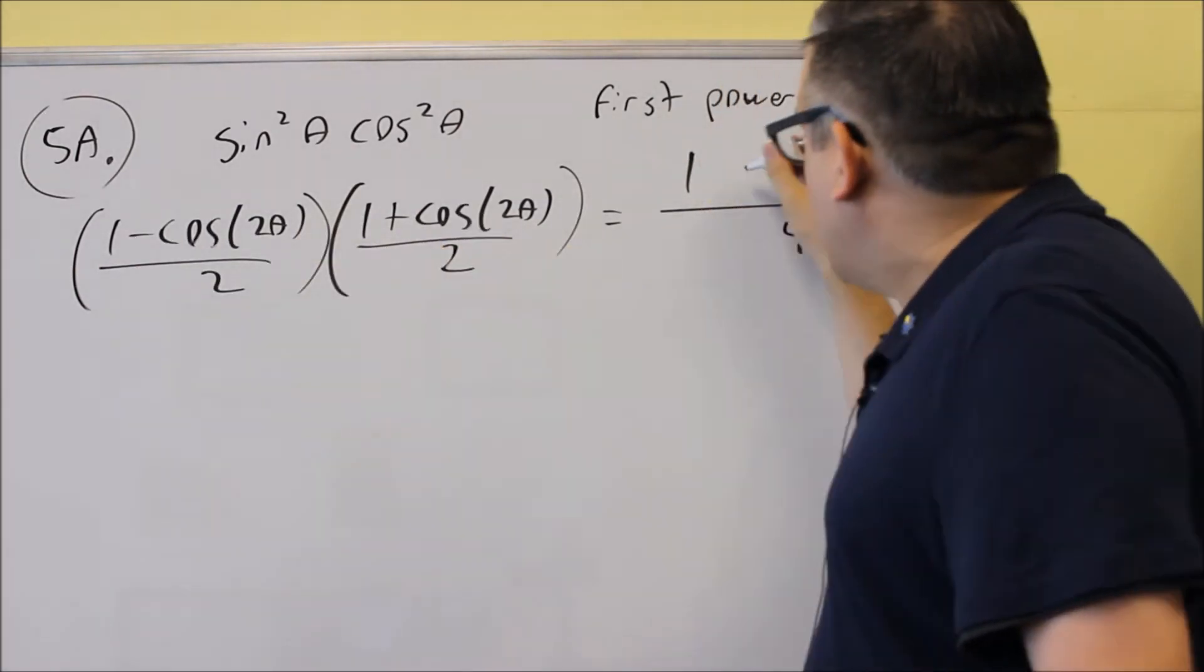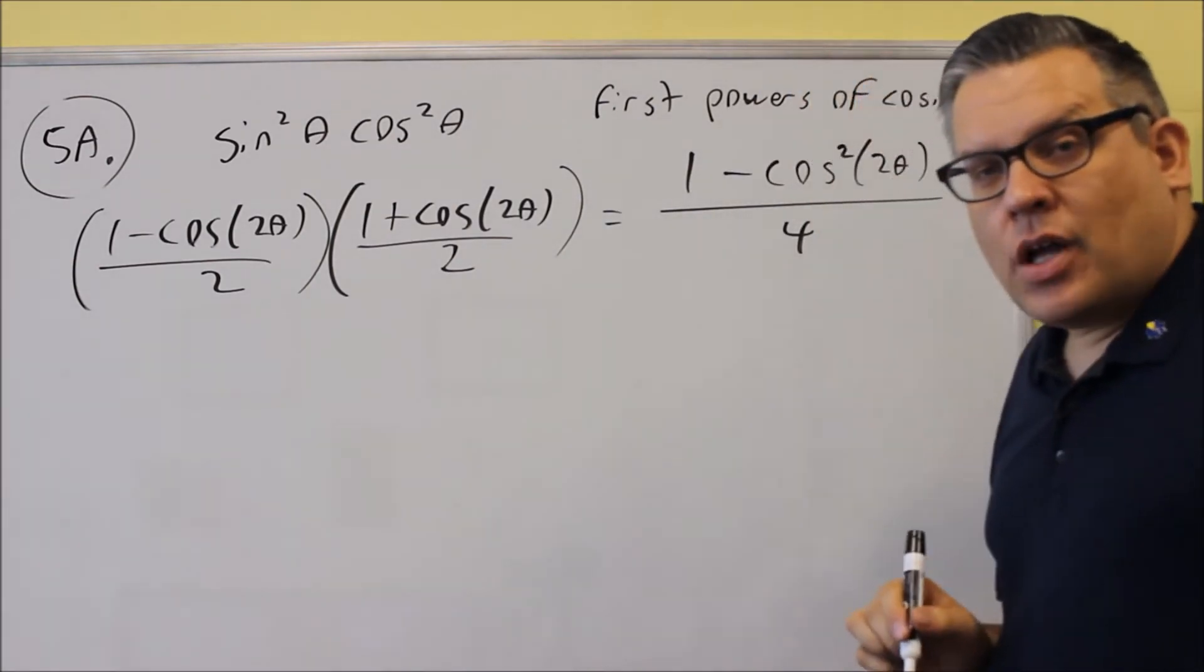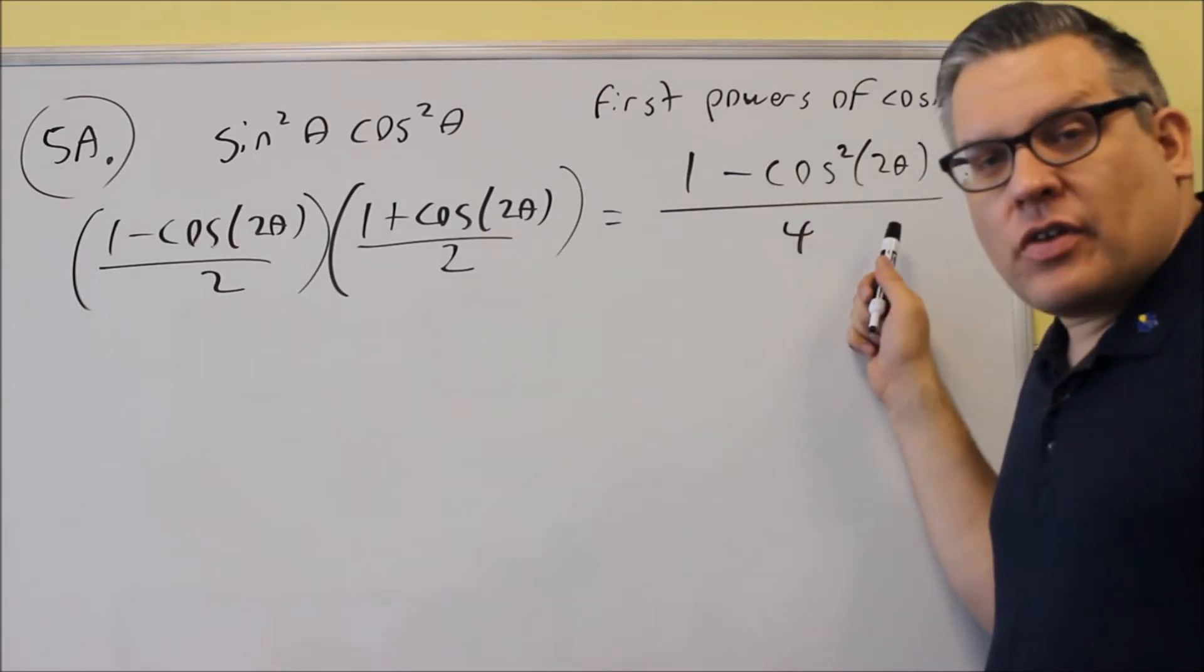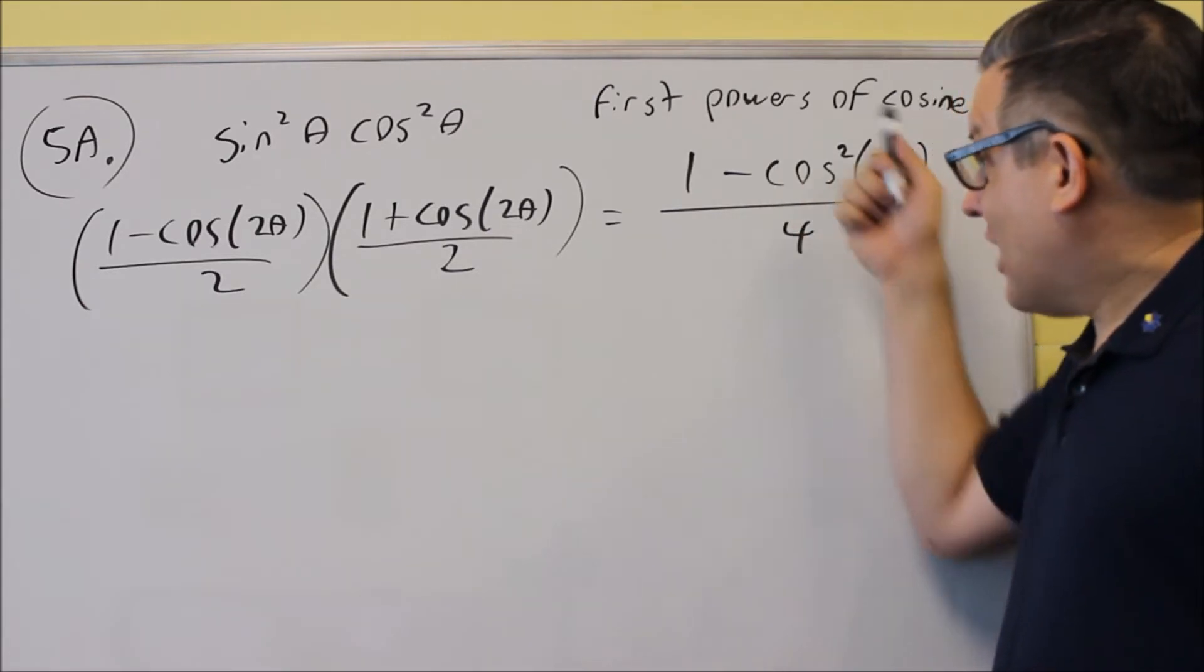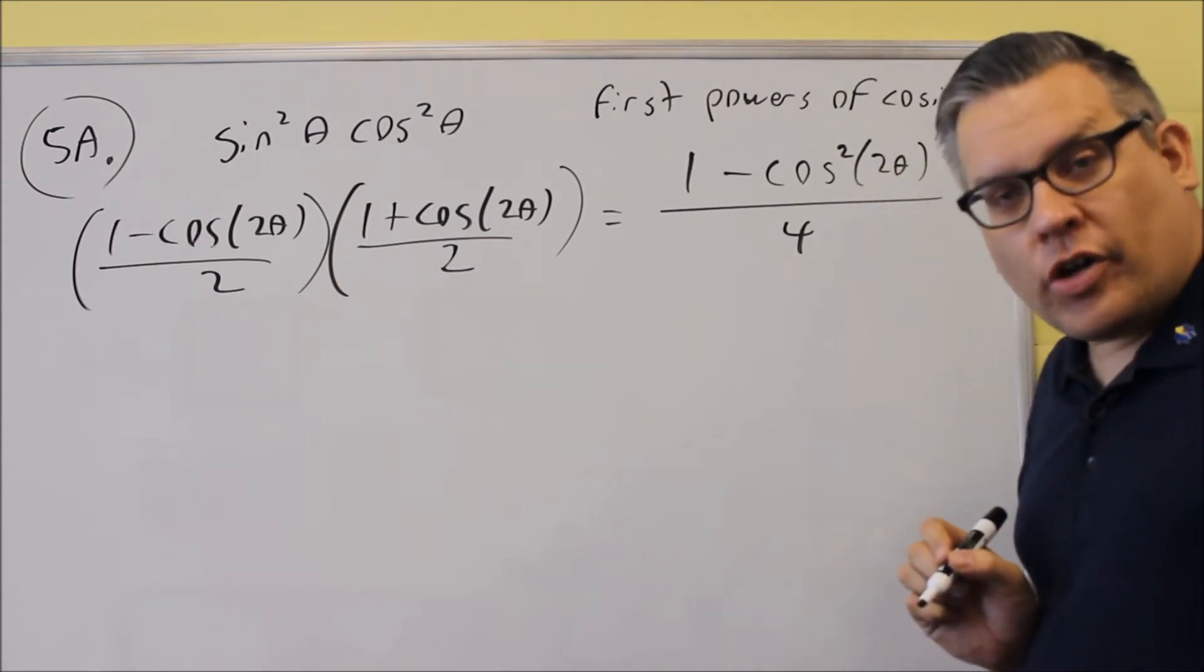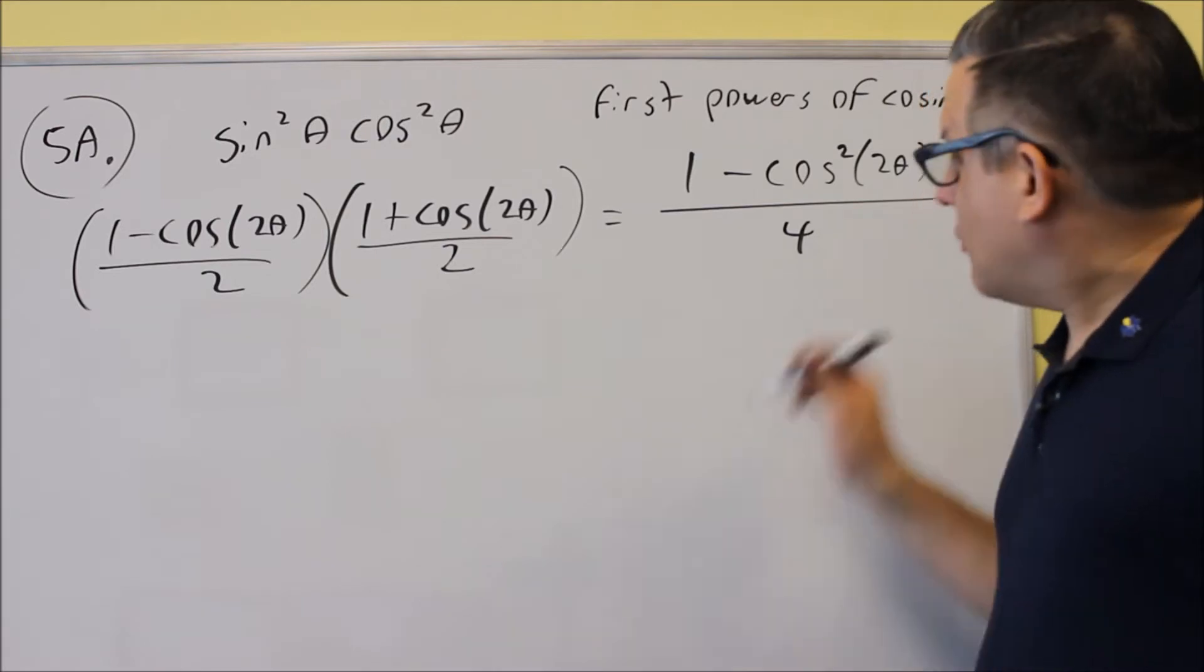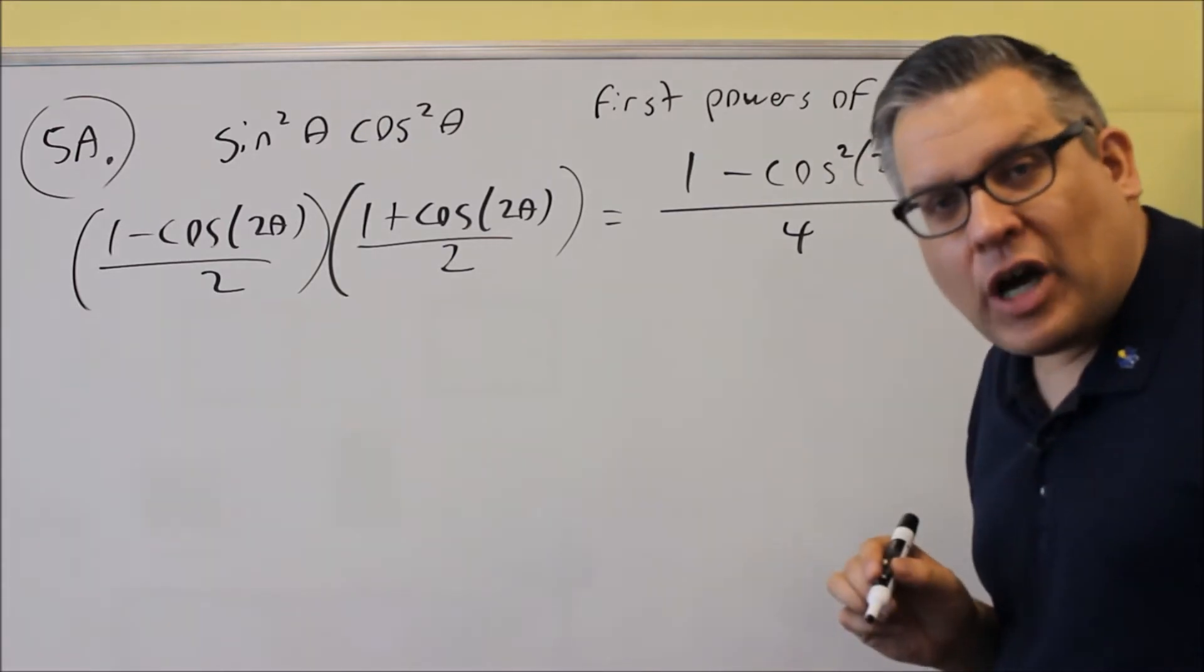Negative and positive, you get a minus, and that's going to be cosine squared of 2 theta. Now the unfortunate thing is we can't leave this as our answer because it asks us to write it as first powers of cosine. We still have a square there, so we want to do another step here by putting in another power reducing formula.